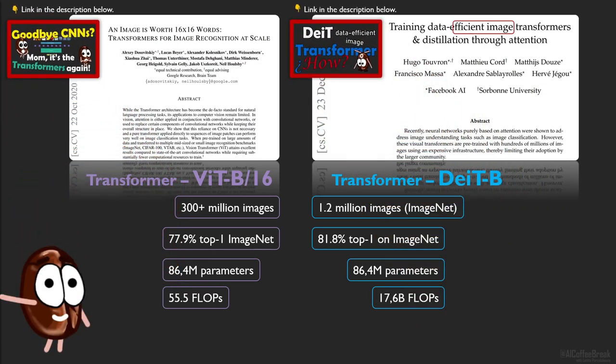So today's story begins with the DEIT transformer from Facebook, achieving impressive results on ImageNet with 86 million parameters and 17 billion flops, improving the data efficiency of VIT from Google. Is there anything more to be done than that?